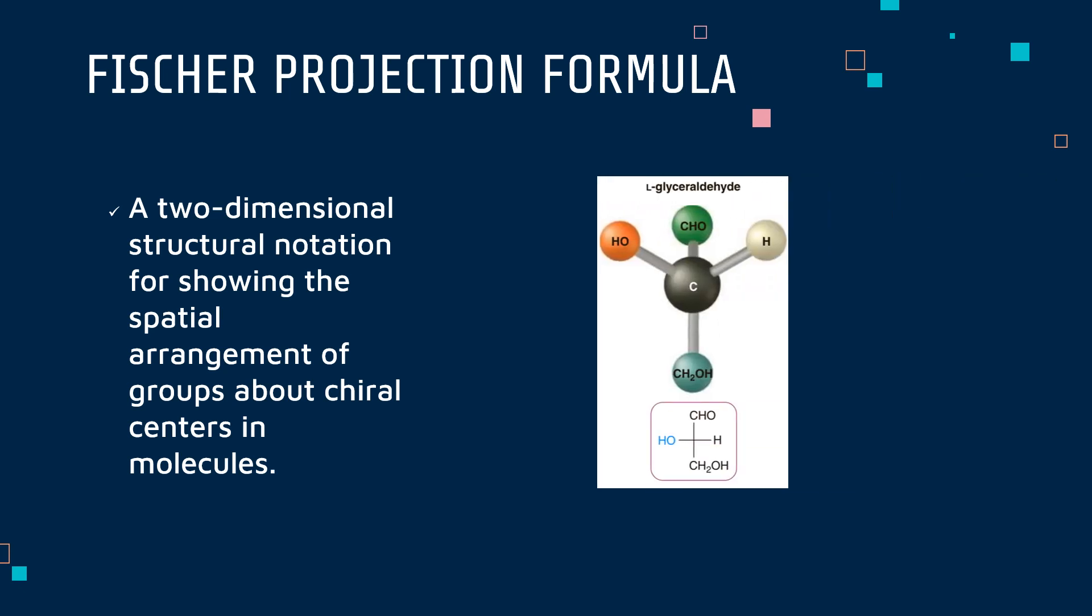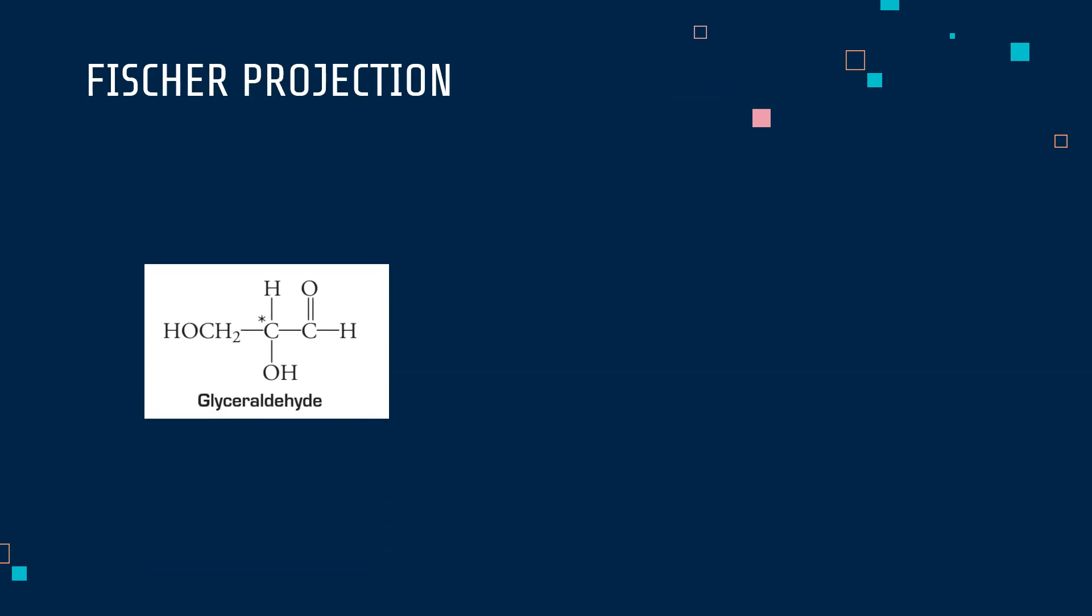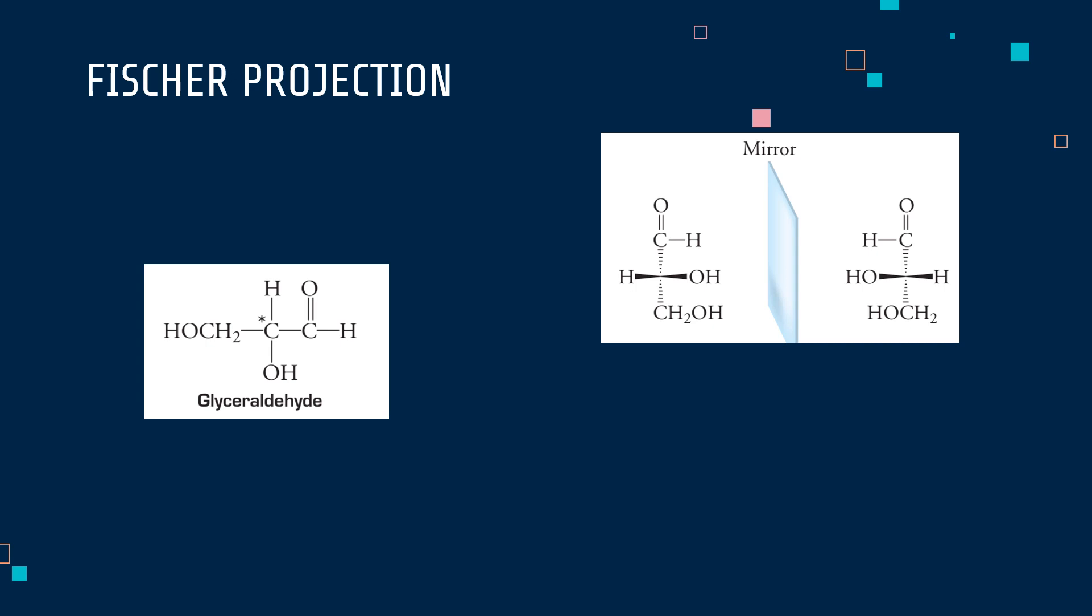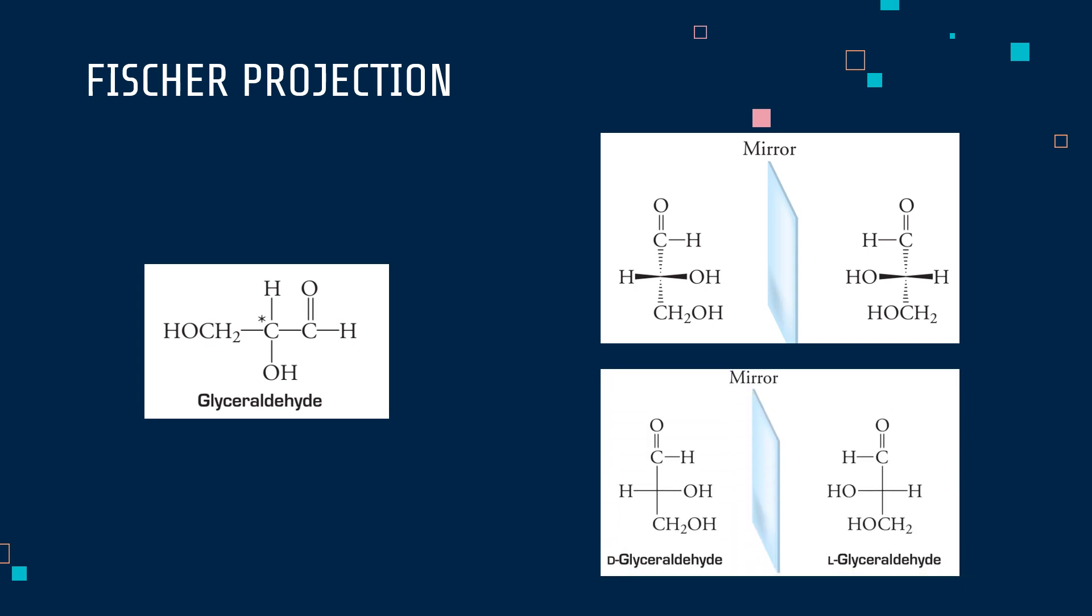So how do we know which is the D enantiomer and the L enantiomer? Let us again have glyceraldehyde as our example. The carbon with the asterisk is our chiral center. Since it has one stereocenter or chiral center, it exists in two stereoisomeric forms or as a pair of enantiomers. The pair of enantiomers can be represented in wedge and dash line notation and also as Fischer projections. The handedness will then be determined by the orientation of the hydroxyl group at the chiral carbon farthest from the aldehyde group or the hydroxyl carbon on the highest numbered chiral carbon. In the case of glyceraldehyde, since there is only one chiral carbon atom, that will be the basis.